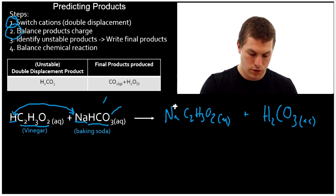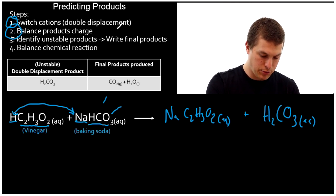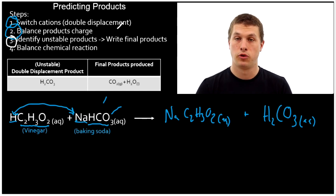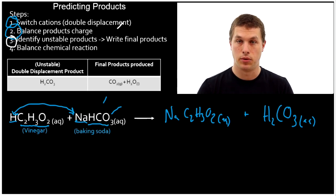So what's step three? Step three says, identify any unstable products. And here's where gas reactions are a little different from reactions you've looked at before. H2CO3, carbonic acid, is not stable.